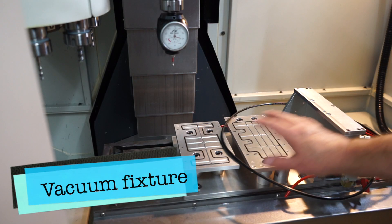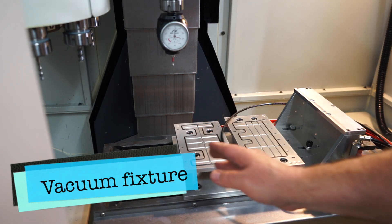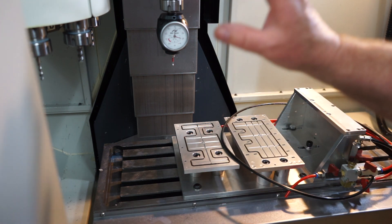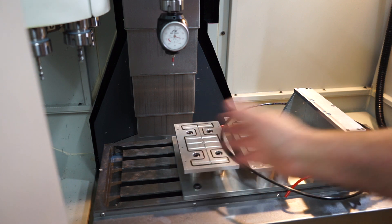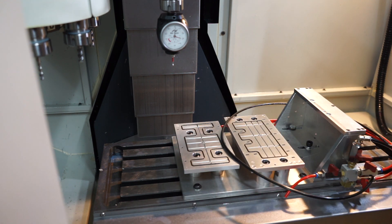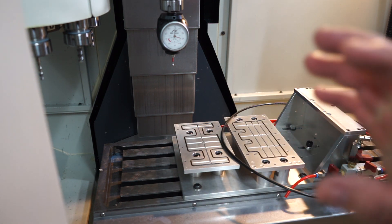You can see now I've got the vacuum fixture back on the table and I'm right on my limits here. This milling machine only got travel of about 396 millimeters in the x-axis. So I'm really right on the limit.